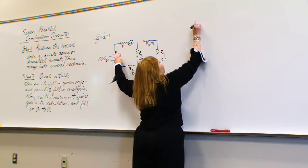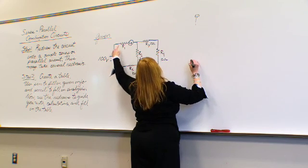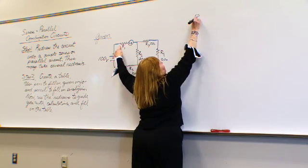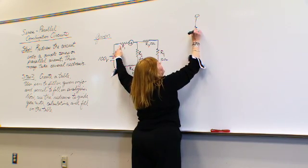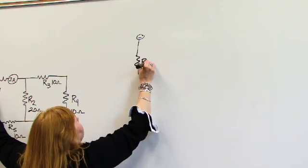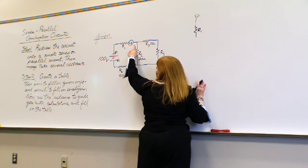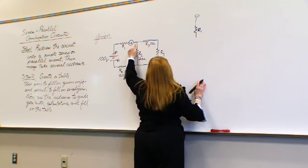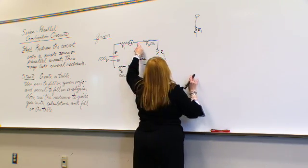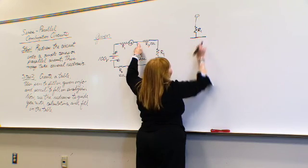We'll leave our source and the first thing that we come across is R1. Now, don't draw in the amp meter yet. We can fill that in when we start using our table. On the other side of R1, notice how the wire splits. Show that the wire is splitting.